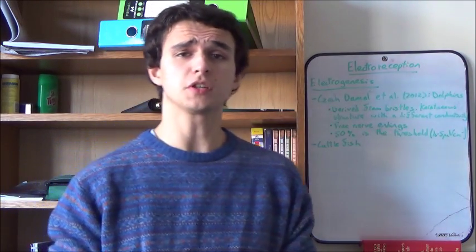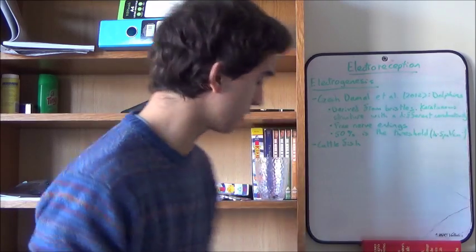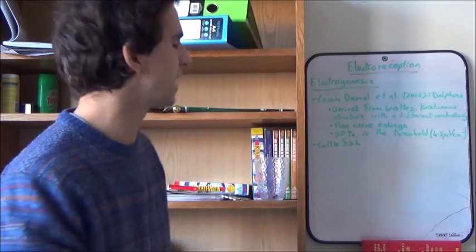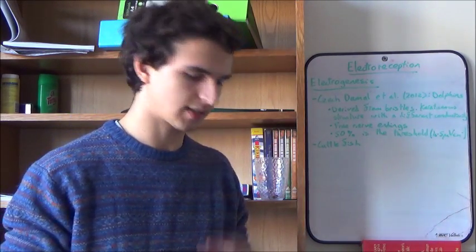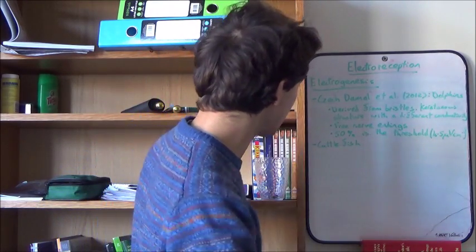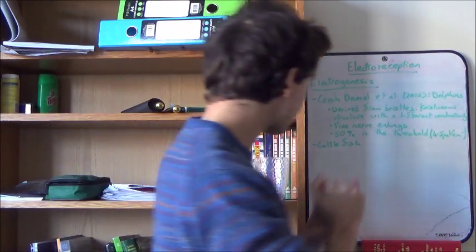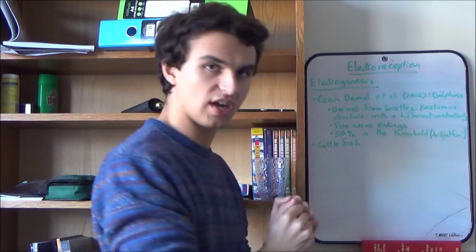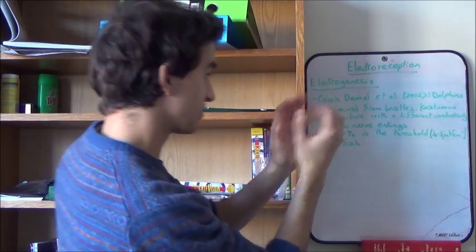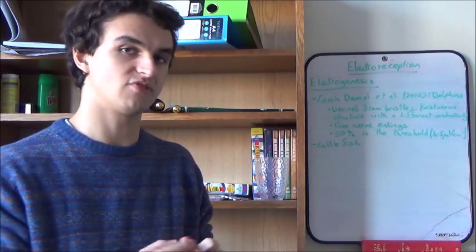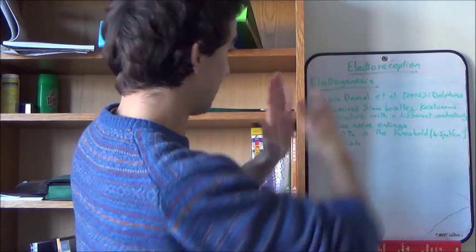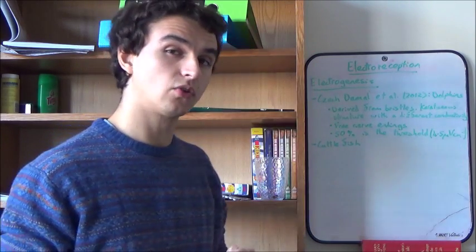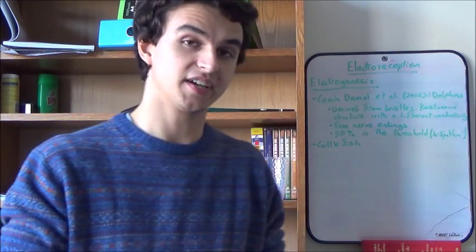I mentioned dolphins earlier. The Guyana dolphin is the only dolphin yet thought to be able to perceive electric fields. The receptors have been identified by Czech-Damal in 2012. These receptors are derived from bristles—a keratinous structure with no hair anymore, but with different conductivity to the rest, which means electrical stimuli can be perceived. These are arranged longitudinally, just like all the other receptors we've been looking at, such as in the platypus.